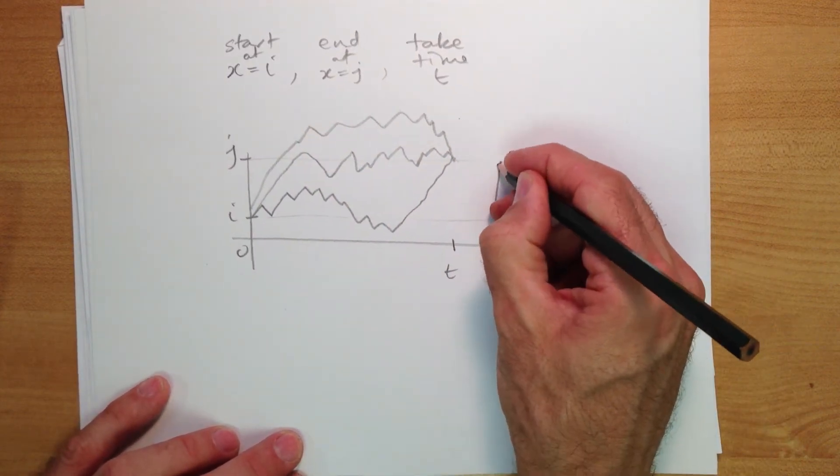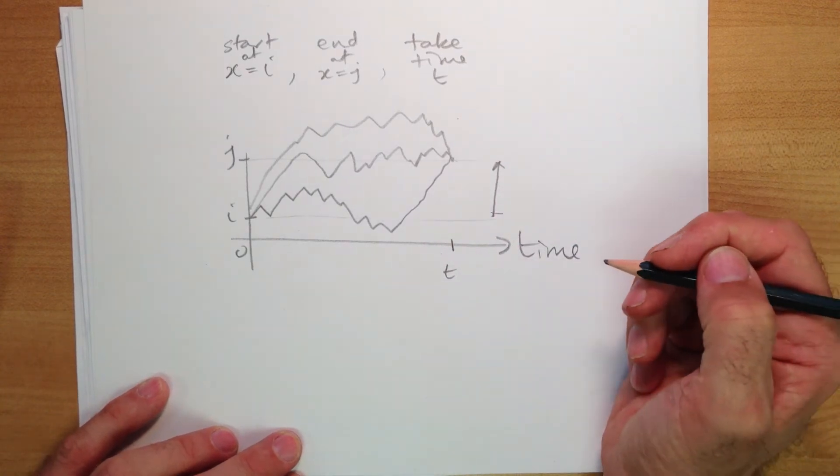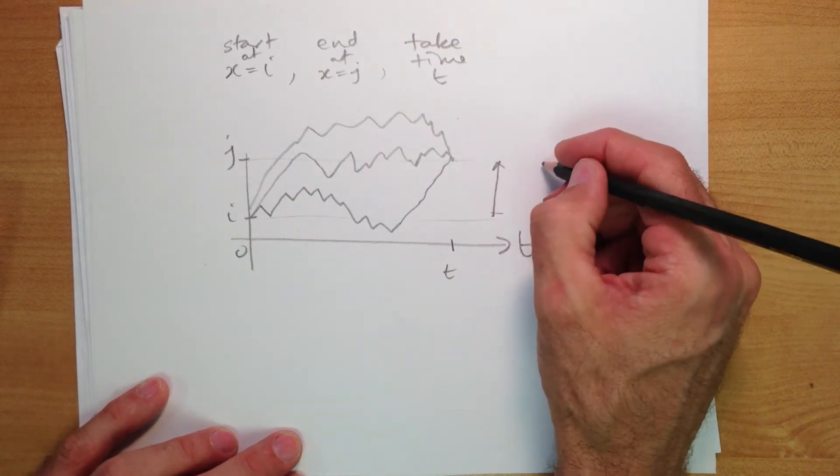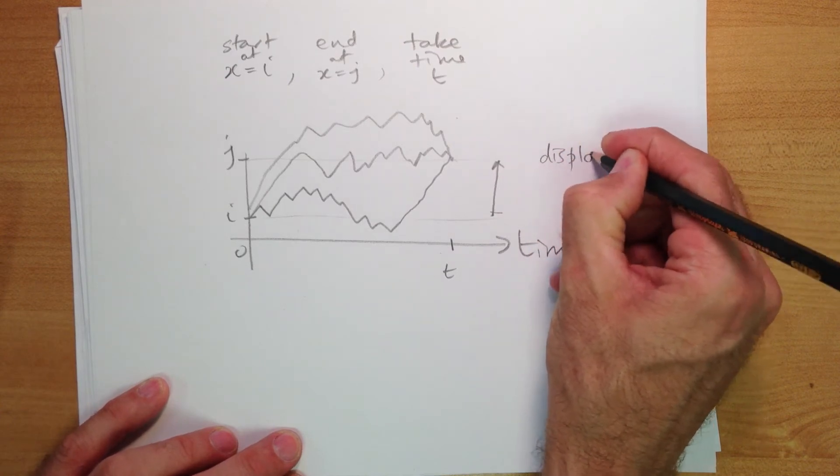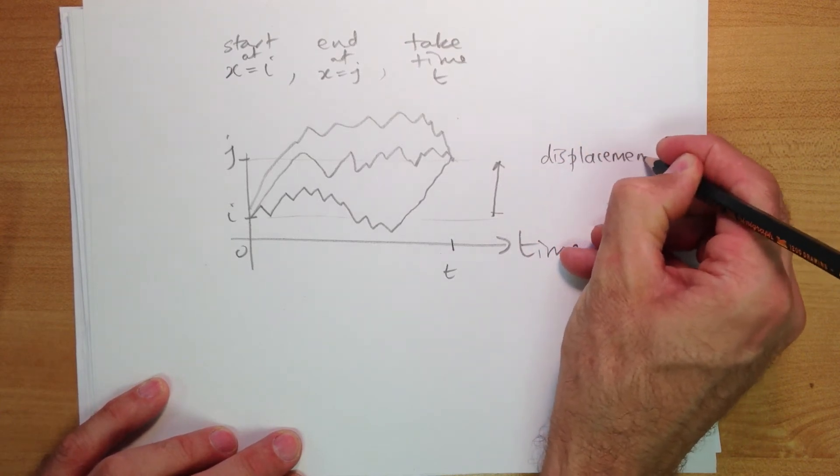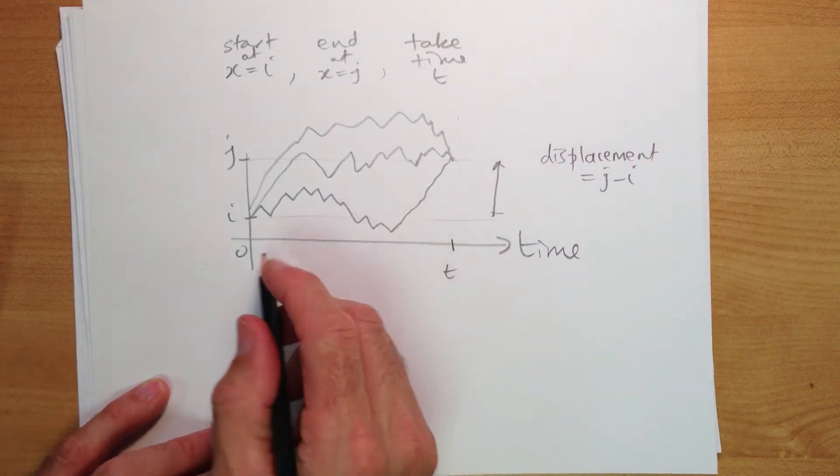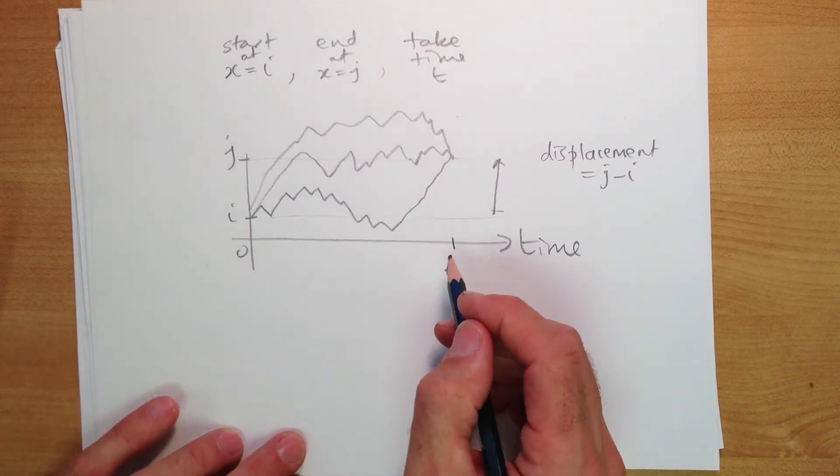To get from i to j, they have to have a displacement of j minus i, and of course they take t steps. So we know these things.